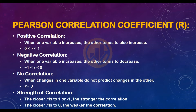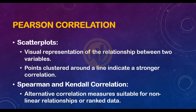The strength of correlation: the closer R is to 1 or minus 1, the stronger the correlation. The closer R is to 0, the weaker the correlation. The scatter plot provides a visual representation of the relationship between two variables — points clustered around a line indicate a stronger correlation. Spearman and Kendall correlations are alternative measures suitable for non-linear relationships or ranked data.